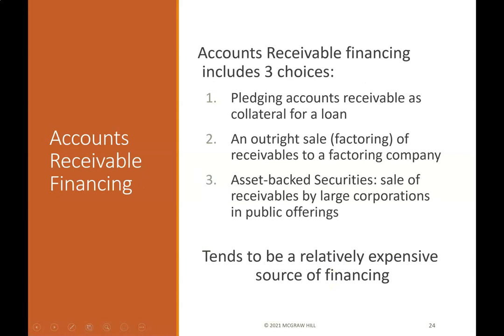Accounts receivable financing includes three choices: first, pledging accounts receivable as collateral for a loan; second, an outright sale — factoring of receivables to a factoring company; and third, asset-backed securities — the sale of receivables by large corporations through public offerings. This tends to be a relatively expensive source of financing.